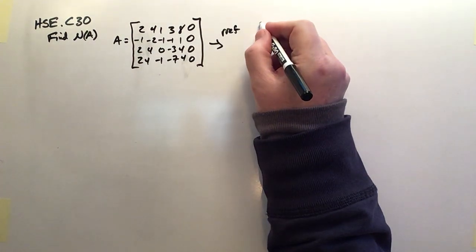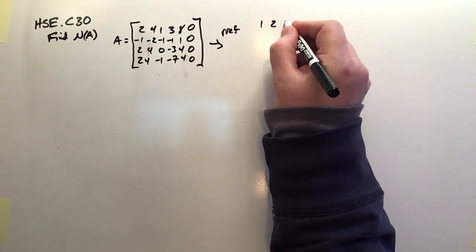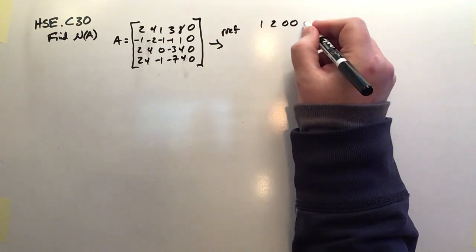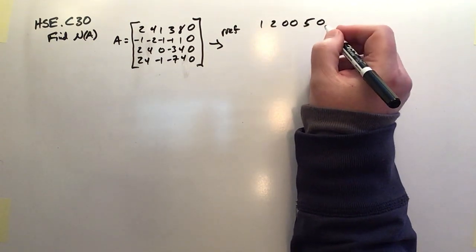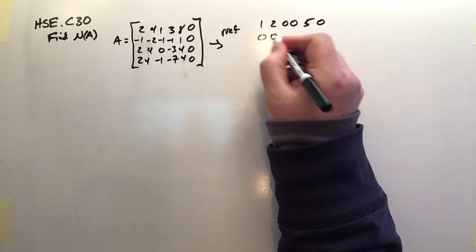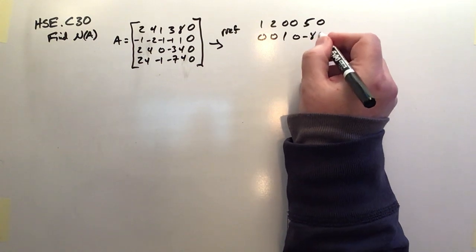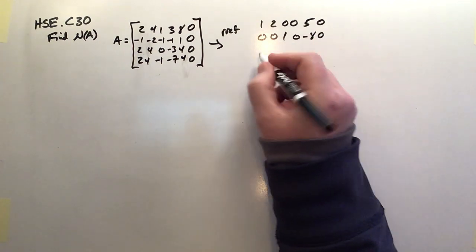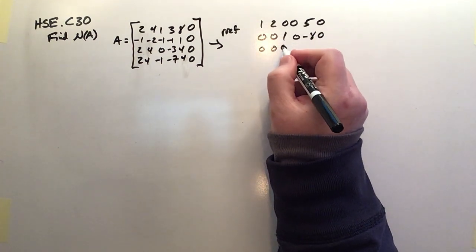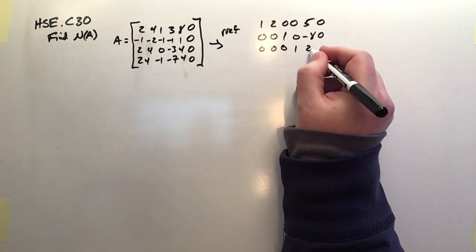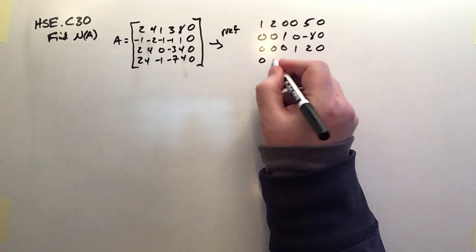We get 1, 2, 0, 0, 5, 0. Second line is 0, 0, 1, 0, negative 8, 0. Line 3 is 0, 0, 0, 1, 2, 0. And the last line is all zeros.